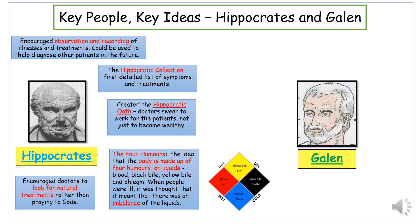Doctors today still swear the Hippocratic Oath, showing the lasting influence of Hippocrates. He also produced the Hippocratic Collection — a detailed list of symptoms and different treatments for different illnesses. By recording observations, he encouraged other doctors to collect information so that future practitioners could improve care for their patients. This helps us connect to Galen, who was also born in Greece like Hippocrates but lived during the Roman Empire and went to live in Rome, so he's often associated with the Romans.